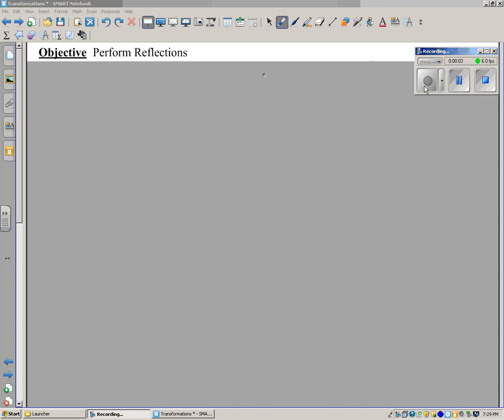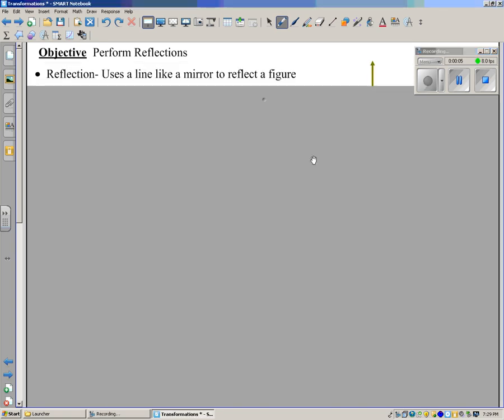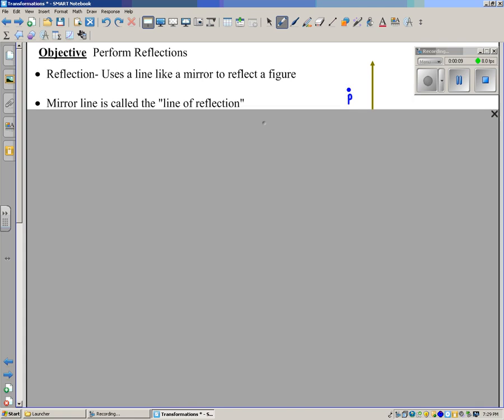Welcome to the next video. In this video, we're going to perform reflections. A reflection uses a line like a mirror to reflect a figure. That mirror line is called the line of reflection, often referred to as M, for mirror.